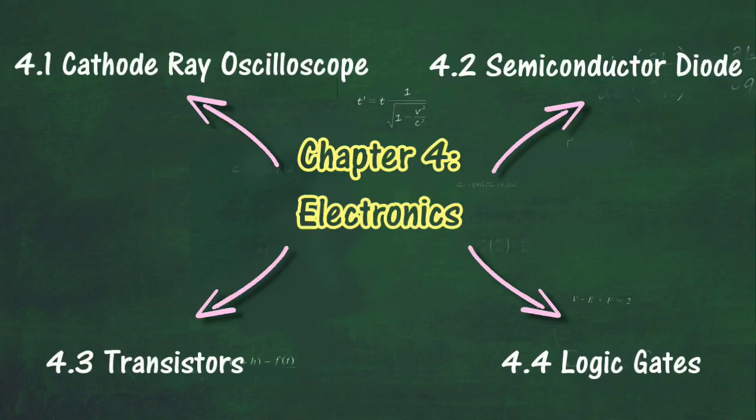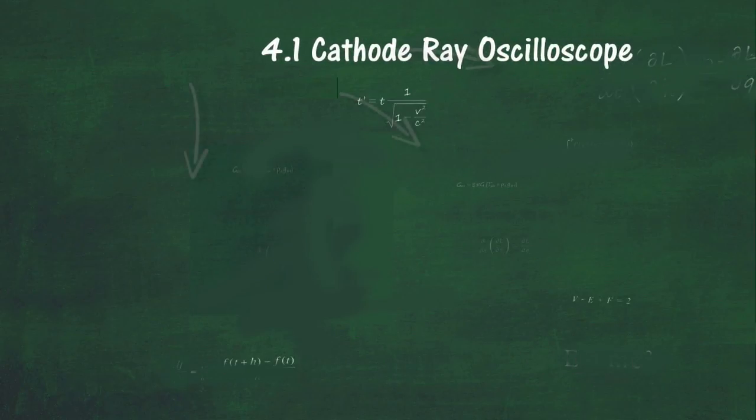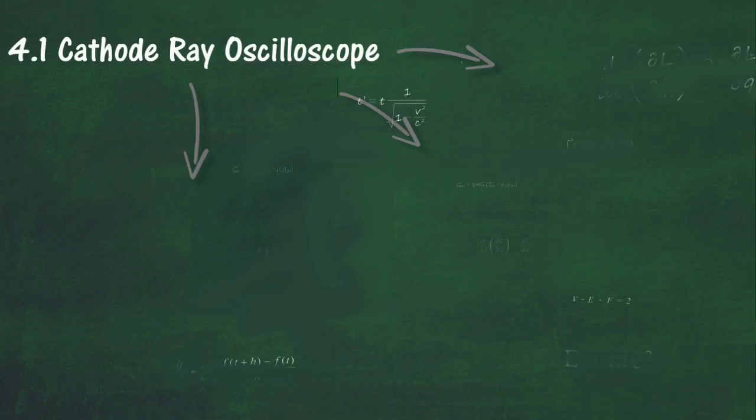In section 4.1, we will learn about the uses of the cathode ray oscilloscope. At the end of this section, you should be able to: